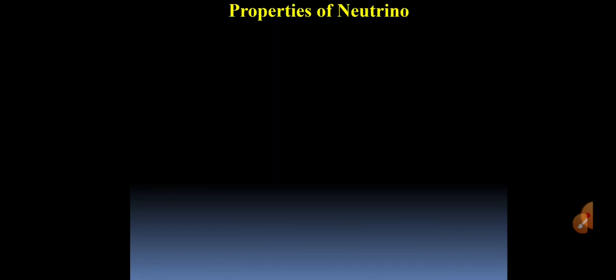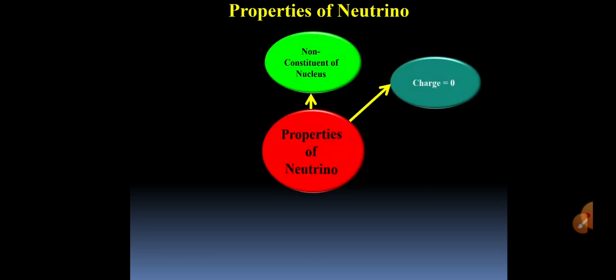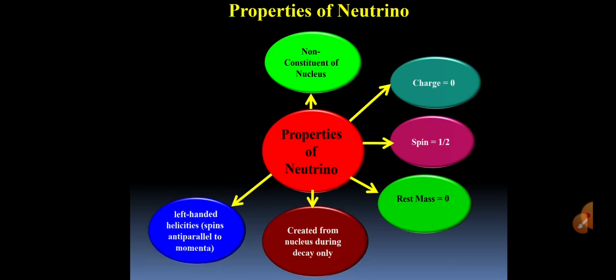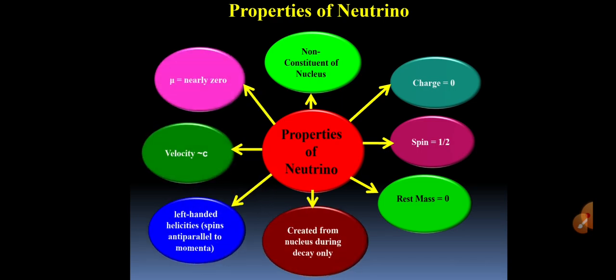Now let us see what are the main properties of neutrino, which are also important. Since neutrino is emitted only at the time of beta decay, so it is not constituent of nucleus like neutron or proton. It is non-constituent of nucleus.